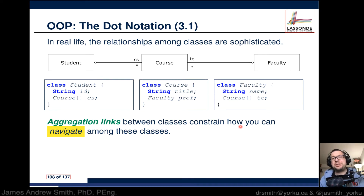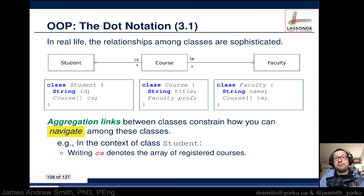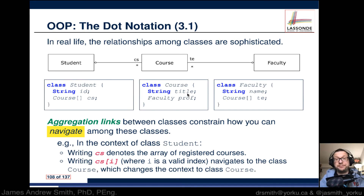Aggregation links between classes constrain how you can navigate among those classes. There isn't a direct connection between Student and Faculty — that connection is done through Course. In the context of class Student, cs denotes the array of registered courses. cs is of type Course array. cs[i] indicates a particular specific course within that array, where each item has a title and a faculty professor associated with it.